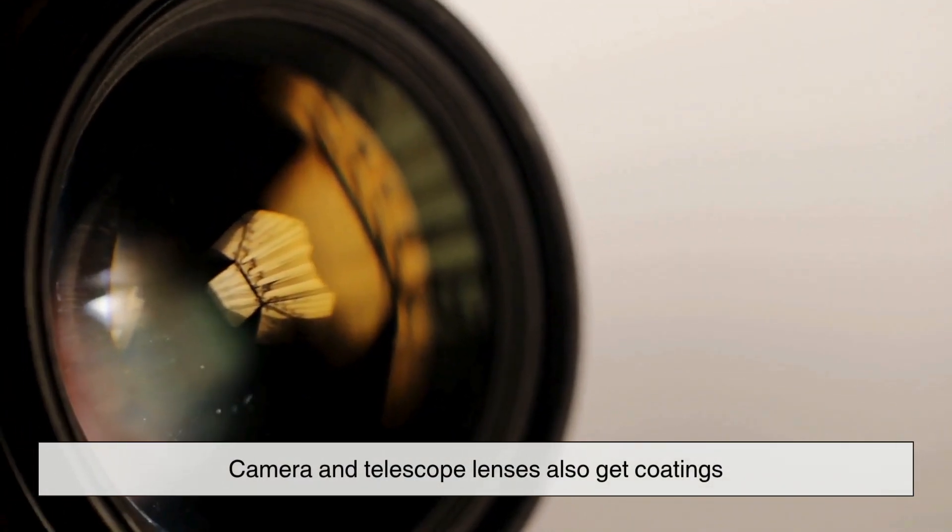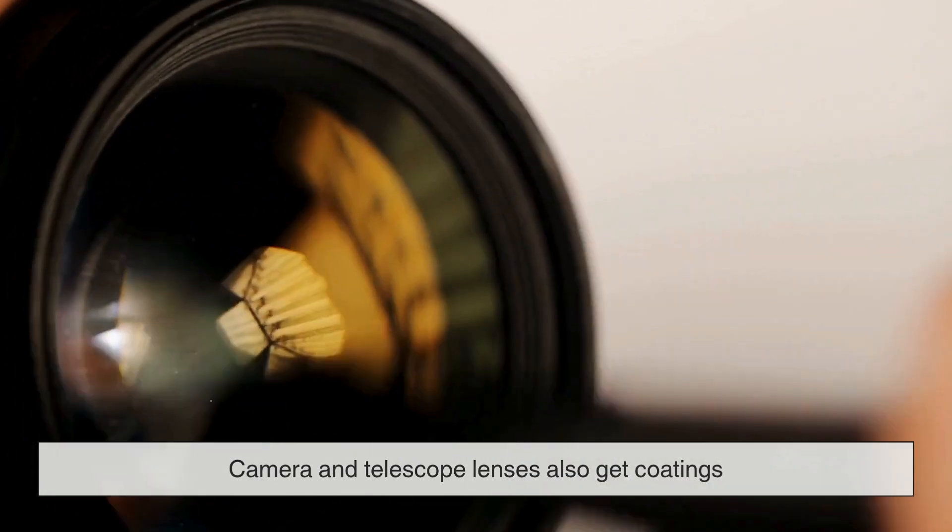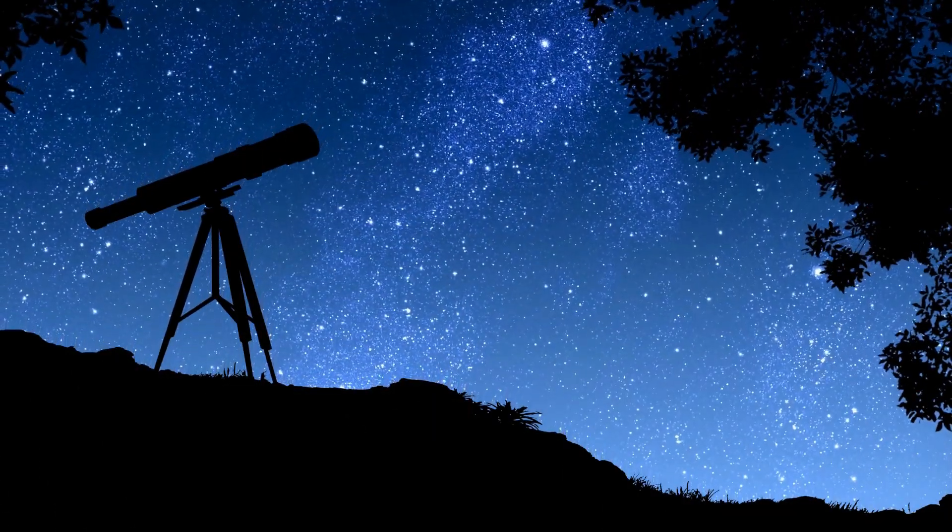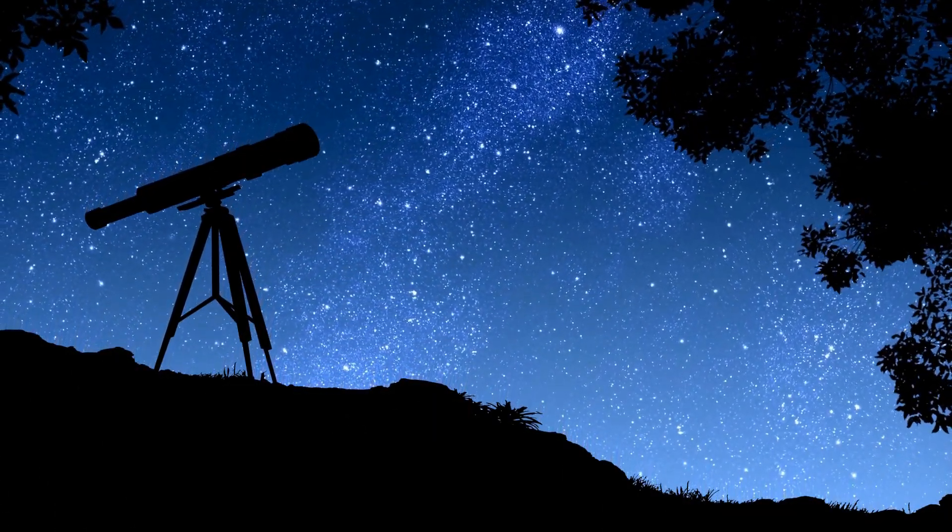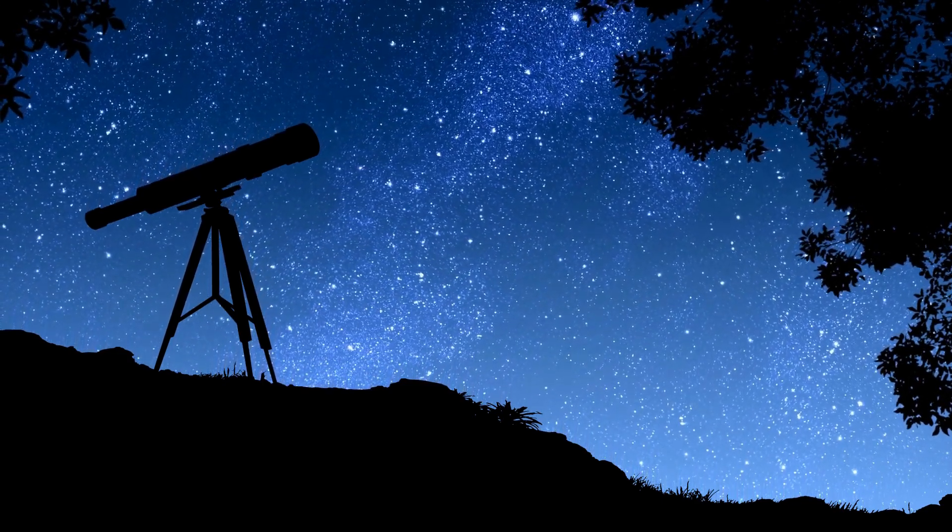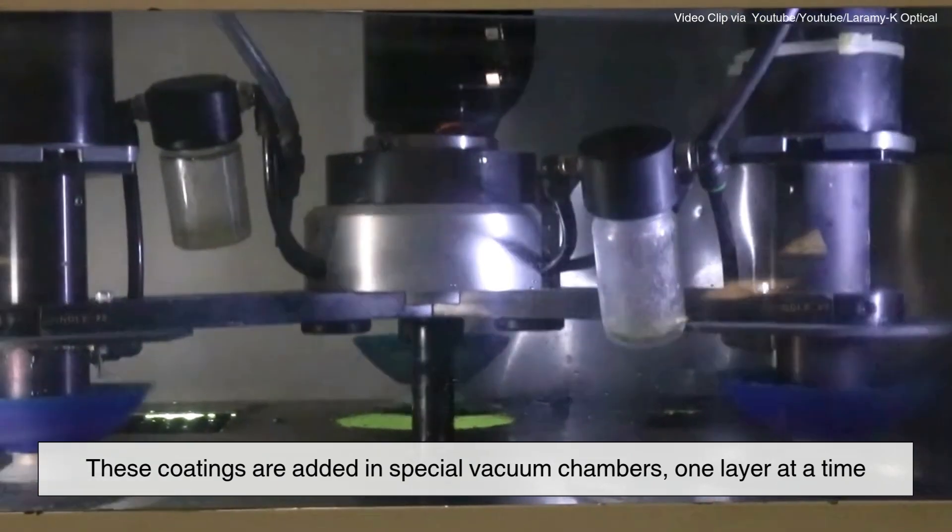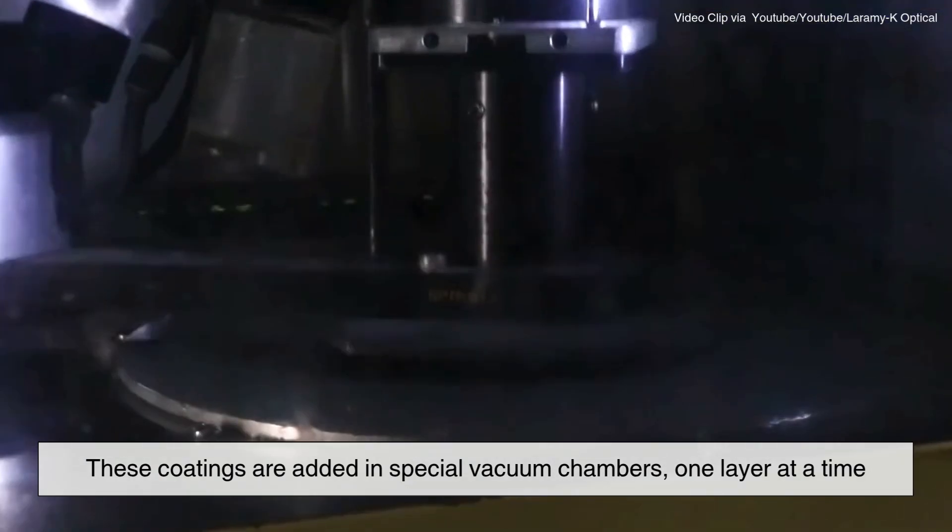Camera and telescope lenses also get coatings to cut down on reflections and help capture more light. This means better image contrast, sharper photos, and clearer views of stars or planets. These coatings are added in special vacuum chambers, one layer at a time.